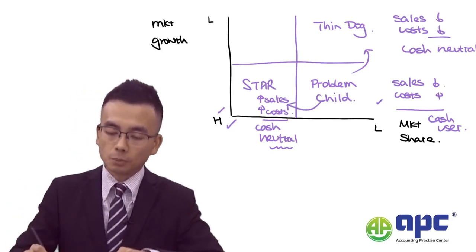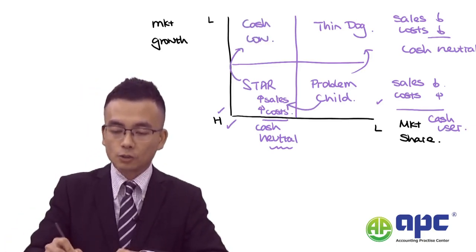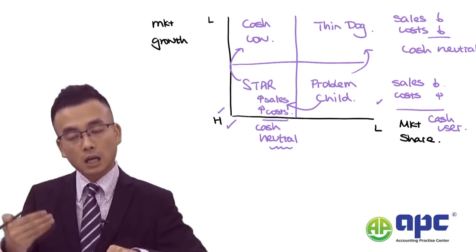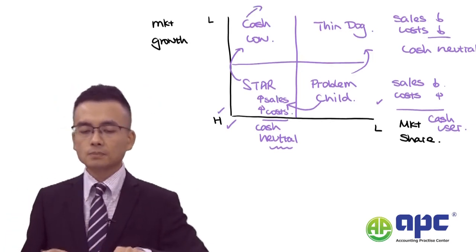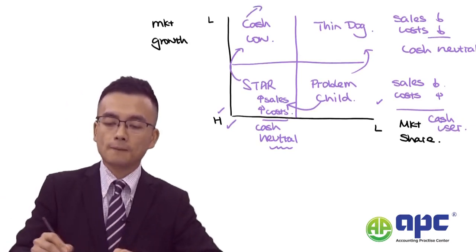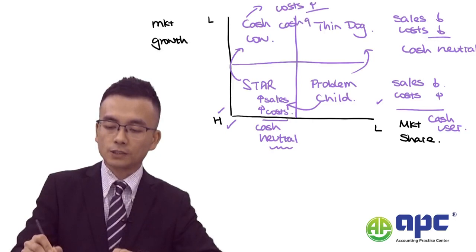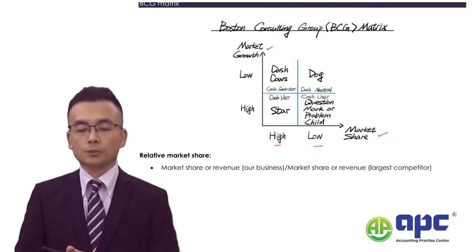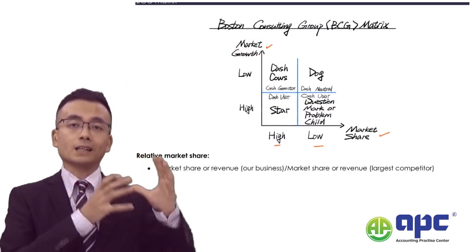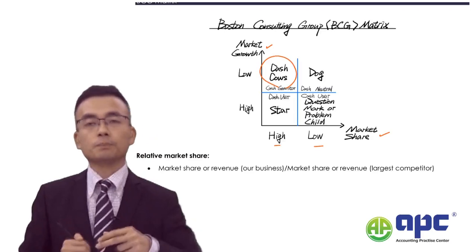If a Problem Child becomes a Star, a Star can be turned into a Cash Cow. Cash Cow means we have relatively high market share but low growth because we already dominate the market. Sales are huge, costs could be high, but this is the cash generator. The goal is to turn each product line, geographical area, or industry we operate in into a Cash Cow.